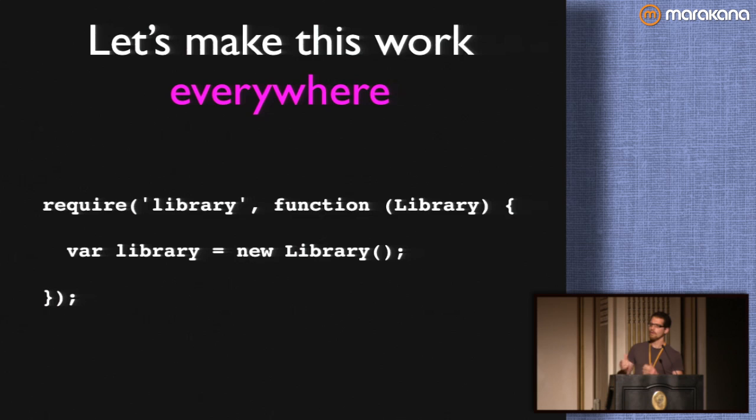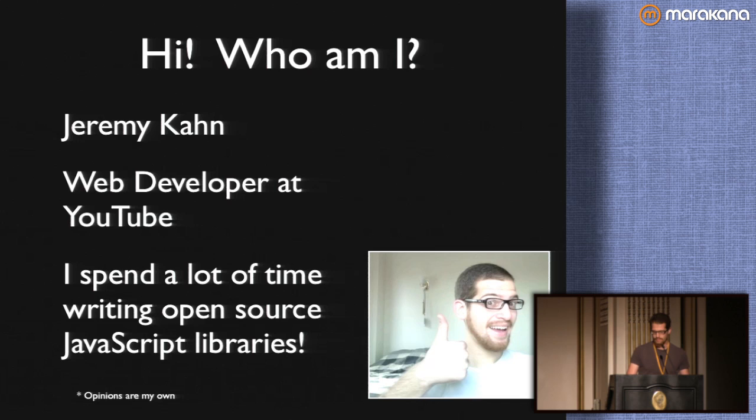This is the goal for today. We want to make this work everywhere that we want it to run. This is just a simple AMD-compatible module. It's getting a file called 'library' and creating a new instance of it. It's a pretty simple goal, but it can be a little bit harder than you might think.